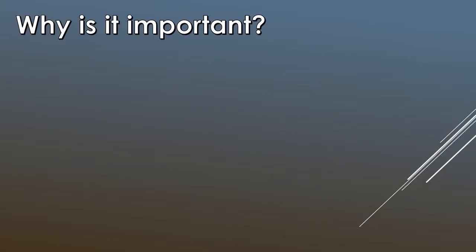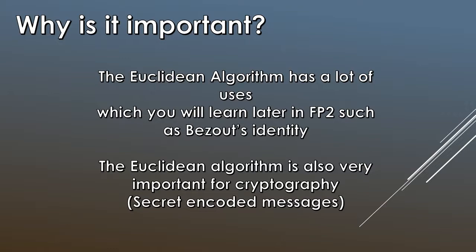So why is the Euclidean algorithm important? Well the Euclidean algorithm has a lot of uses which we will learn about later in FP2. So for example it's used in Bezout's identity when we're working backwards to find the coefficients of the equation.